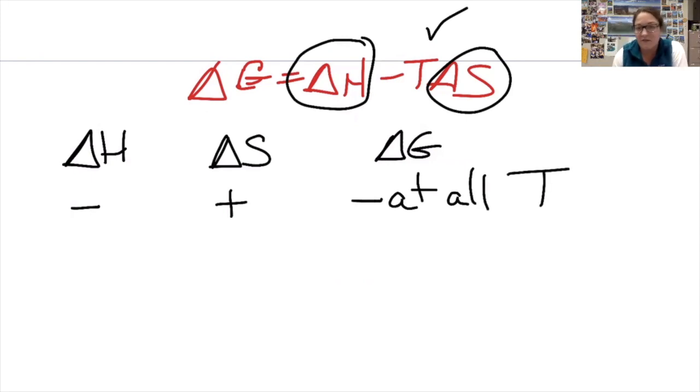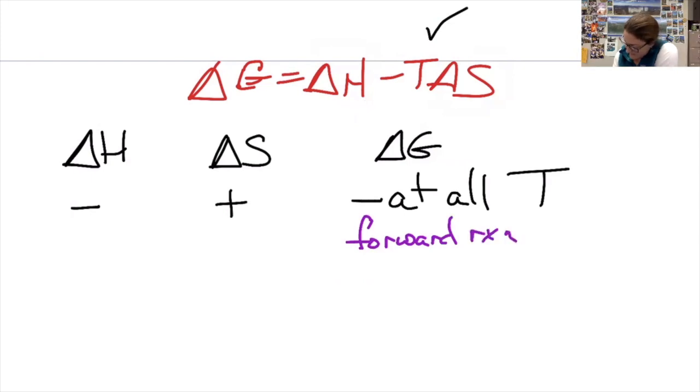I will have a negative delta G at all temperatures. Since temperature is in Kelvin, there's no such thing as negative. What this means is no matter what the temperature, the forward reaction is favored at all temperatures.